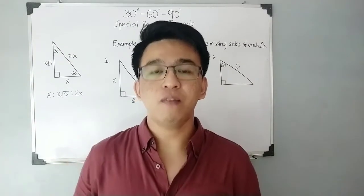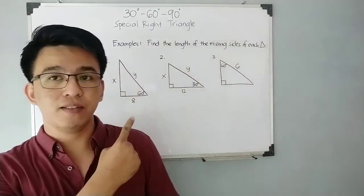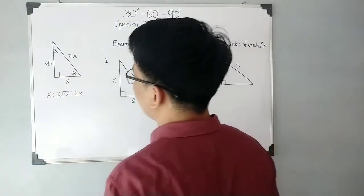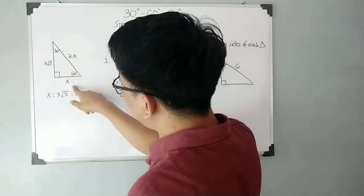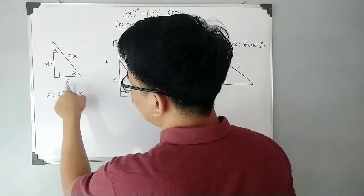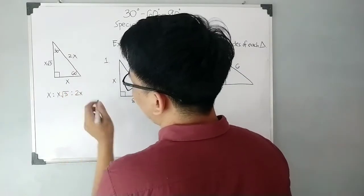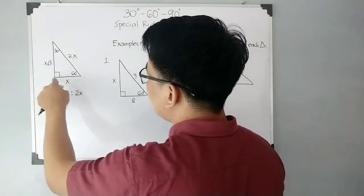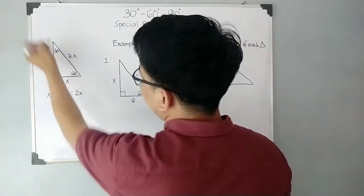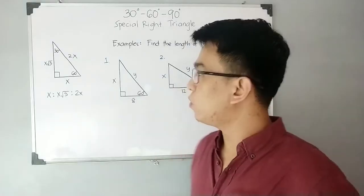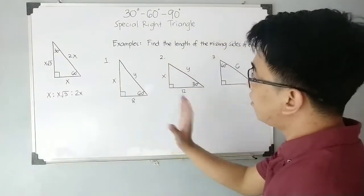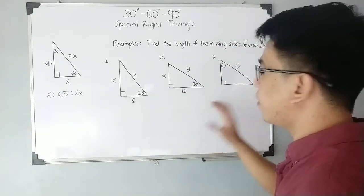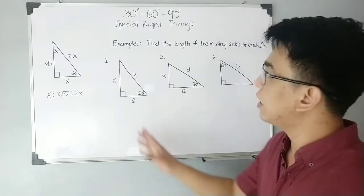In this part of the video I will teach you how to find the missing sides of given right triangles. In the 30-60-90 special right triangle, the side opposite the 30-degree angle is the shorter leg represented by x, the side opposite the 60-degree angle is the longer leg represented by x√3, and the hypotenuse is represented by 2x.